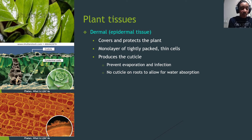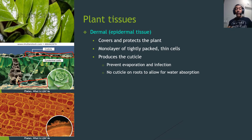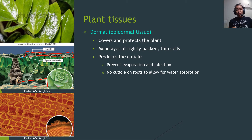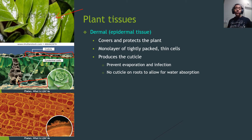The epidermis is a monolayer of very tightly packed, thin cells. These epidermal cells are responsible for producing the cuticle — a waxy substance that covers the top part of the leaf. The cuticle prevents evaporation of water from the leaves and protects against infection. There is no cuticle on the roots, because the cuticle would also prevent water from being absorbed.